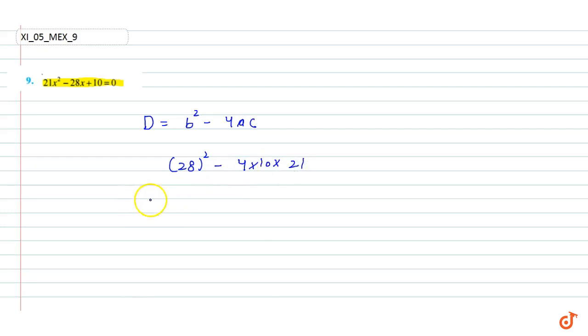28 square value: 28 whole square equals 784. And 21 into 4 is 84, and 84 into 10 is 840. So the value is 784 minus 840, which equals minus 56.